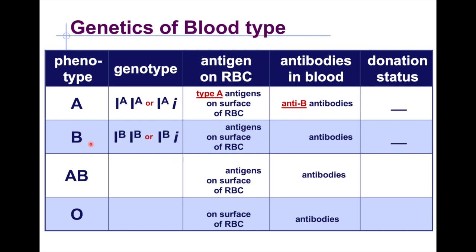For blood type B, these are the possible genotypes — you can carry an allele for blood type O. Your red blood cells will have type B antigens, and your antibodies will be anti-A. This means you cannot donate type A blood to a blood type B person.